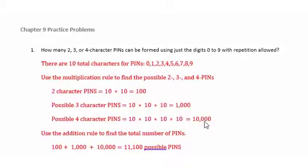We're going to get 1,000 and 10,000. Then we'll use the addition rule to find the total number of PINs. So we'll add up the possibilities for 2, 3, and 4 character PINs, and we end up with 11,100 possible PINs.